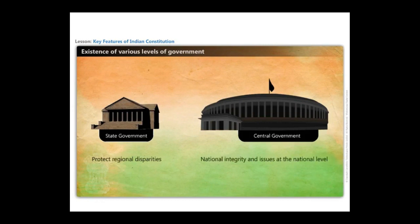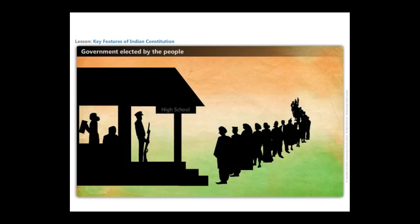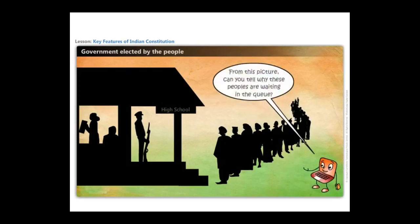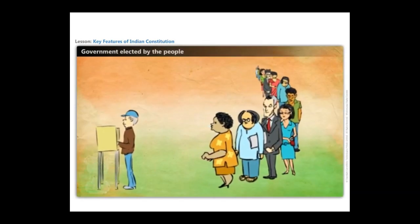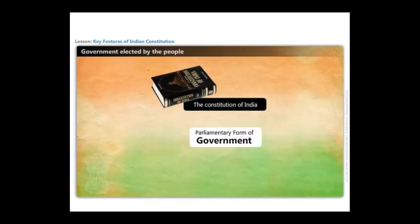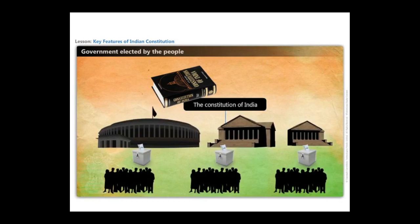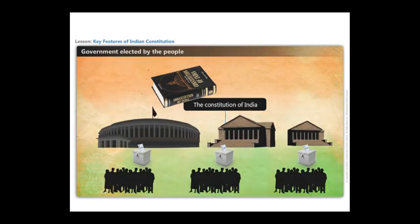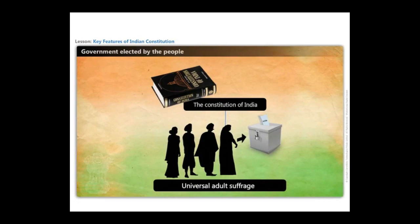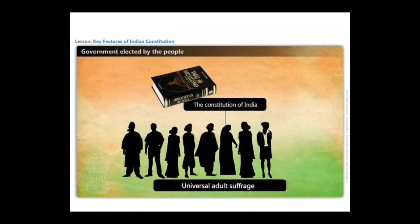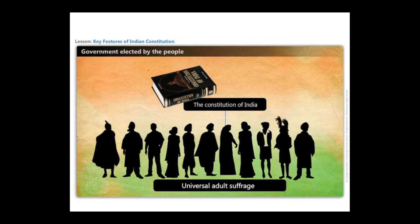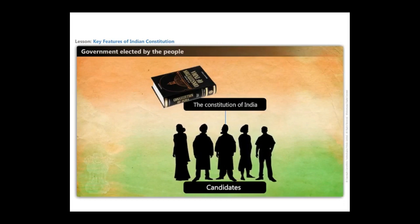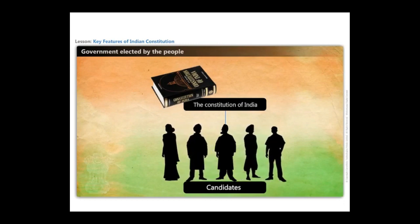The constitution of India opted for a parliamentary form of government, where different tiers of government consist of representatives elected by the people. The constitution of India guarantees universal adult suffrage for all citizens, which means every person above 18 years of age, irrespective of their gender, religion, caste, creed, or place, has an equal right to vote. So the people of India have a direct role in electing their representatives. Moreover, every citizen of the country, irrespective of their social background, can also contest in elections.